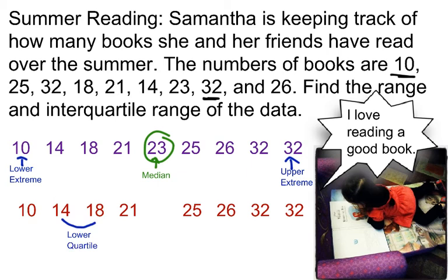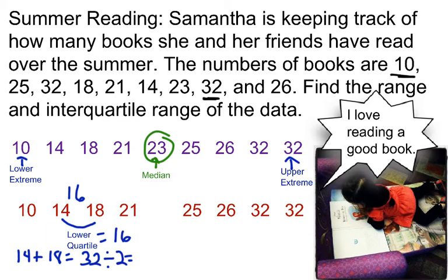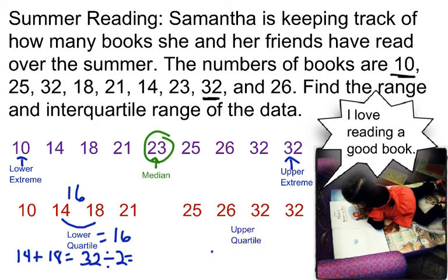I have to find the middle of 14 and 18. Well, 14 plus 18 is 32, and then I divide that by 2 to get 16. So, my lower quartile is 16. Looking at my upper quartile, I also have 2 in the middle. I'm going to add 26 plus 32, which is 58, and divide that by 2 to get 29.